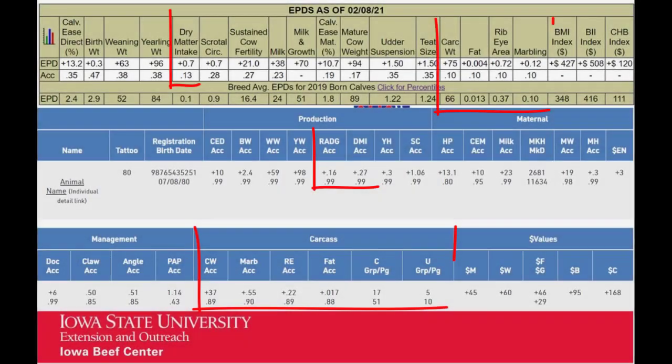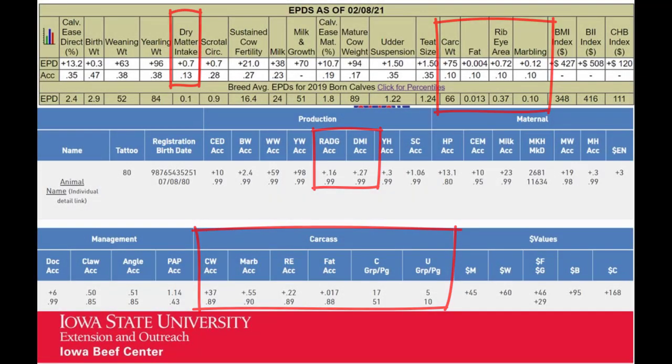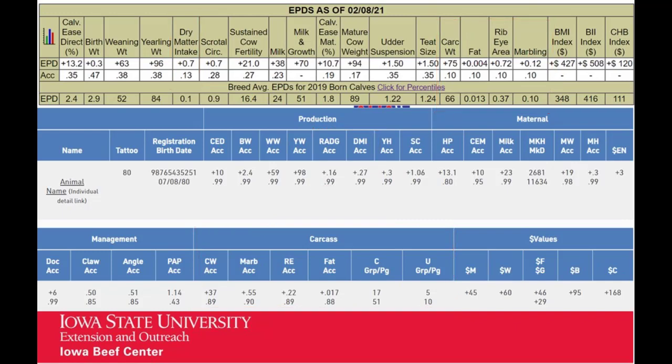For example, if you retain ownership, then carcass traits should become more important. If you sell at weaning, the obvious growth traits should take precedence in your selection process.